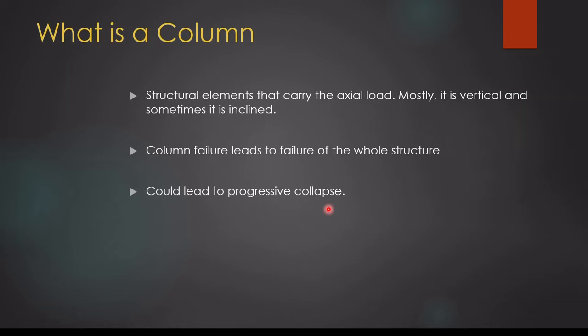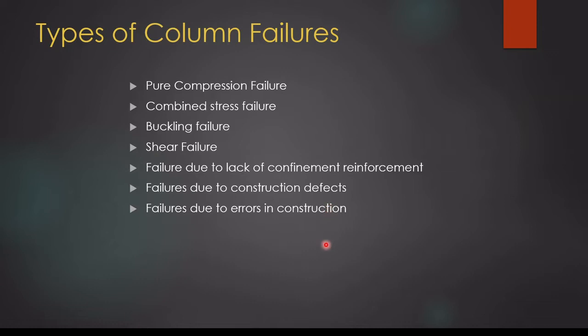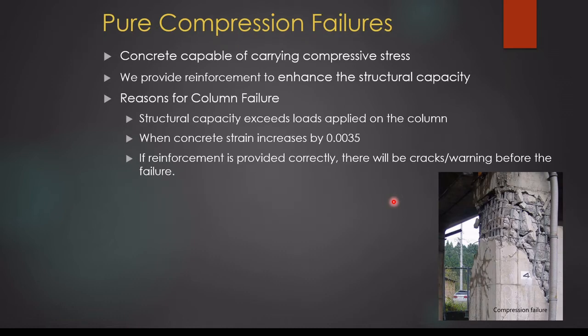Therefore we have to be much aware about the failure methods, and designers should do column designs correctly with much care and attention. The types of column failures are: pure compression failure, combined stress failure, buckling failure, shear failure, failure due to lack of confinement reinforcement, failure due to construction defects, and failure due to errors in construction. Let's discuss each of these failure modes in detail.